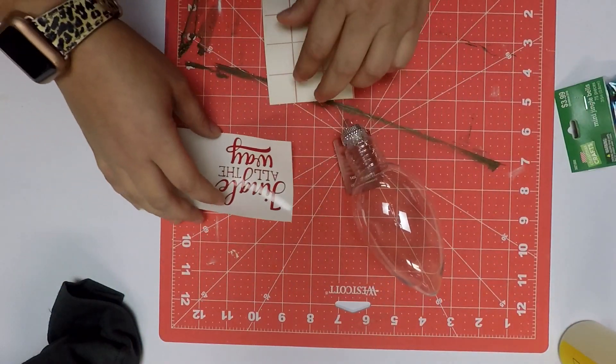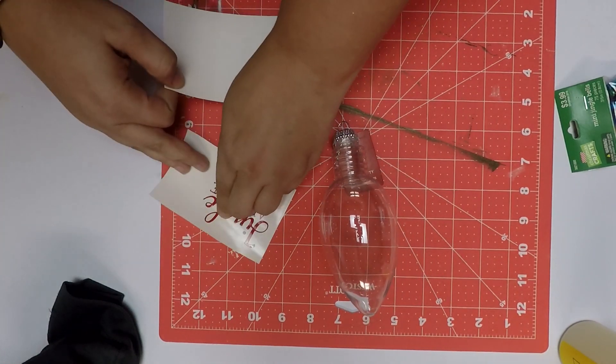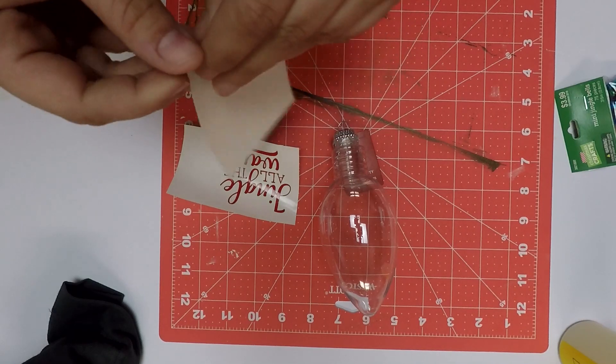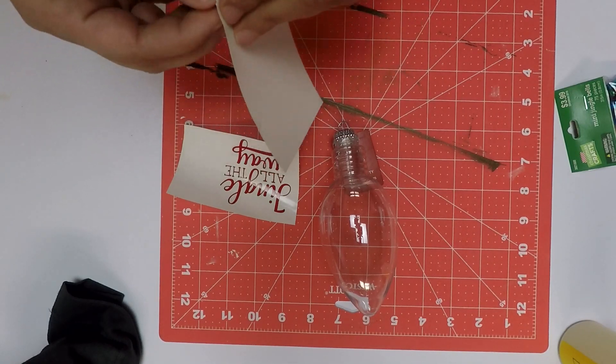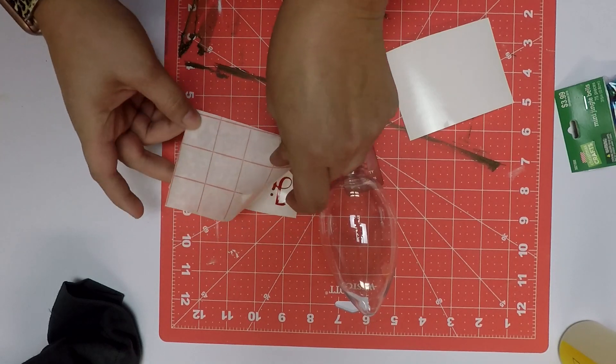The first thing we're going to do is mask our vinyl, which this is just Oracle 651 in red. I'm going to take the transfer tape and cover it, and I cut my design two and a half inches.